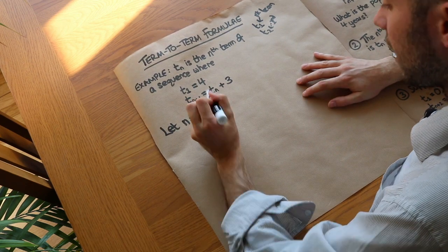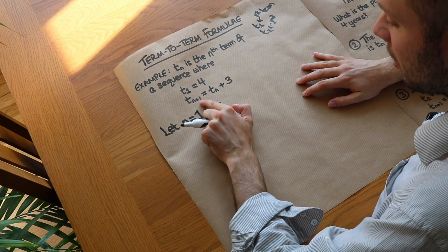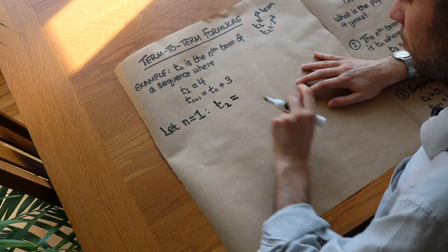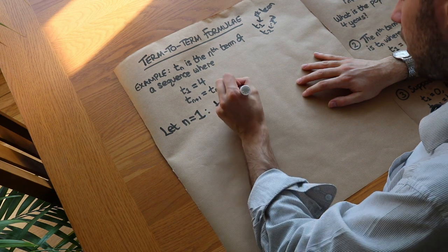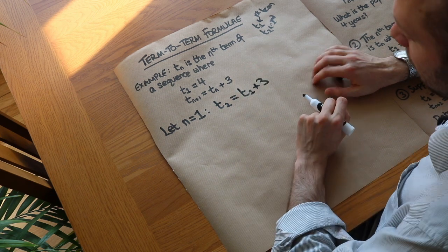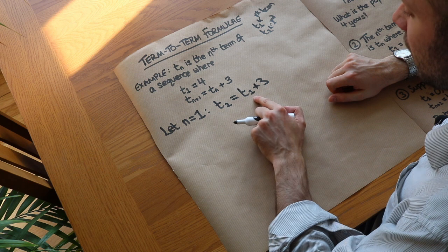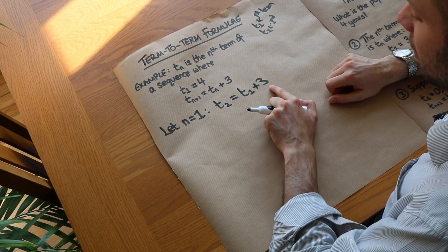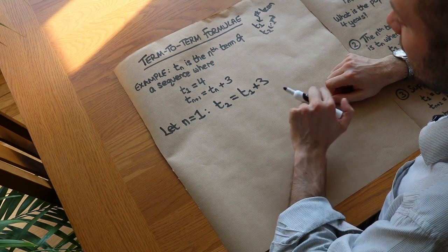If n is 1, then n plus 1 is 2, so we'd have T2 is equal to T1 plus 3. In words, that says the second term of the sequence is equal to the first term plus 3. So if we've got the first term and we add 3 to it, it gives us the second term.